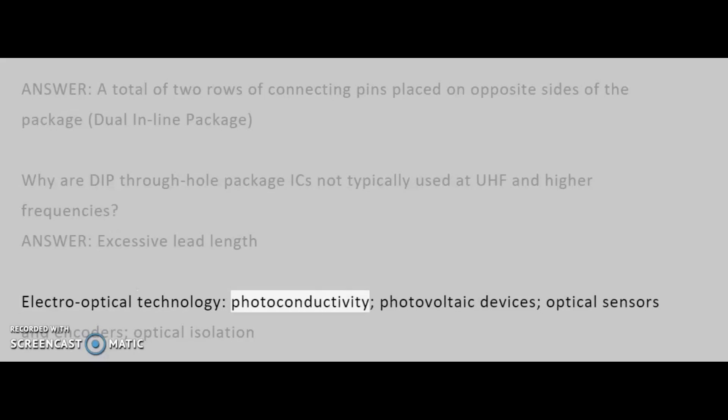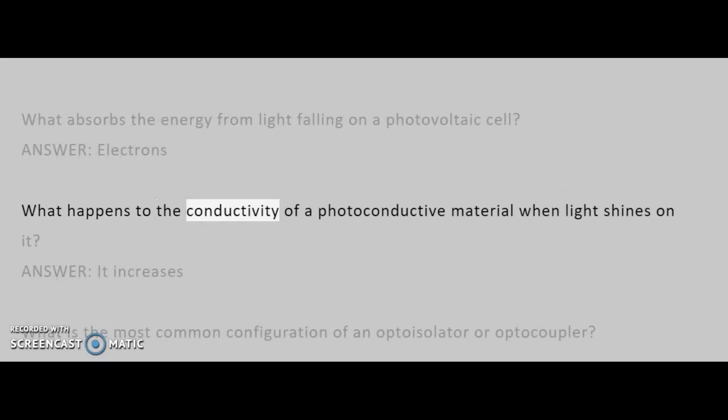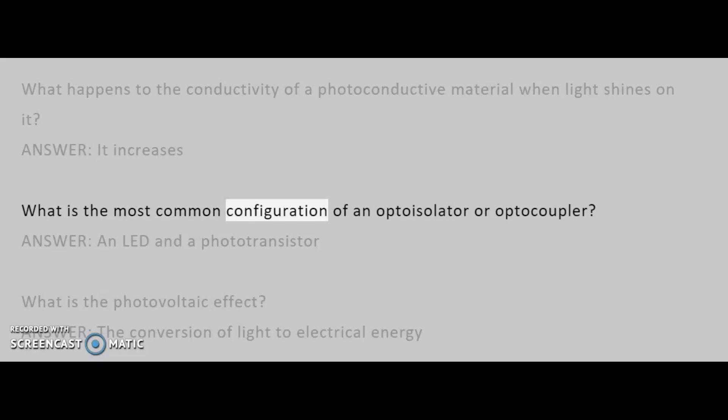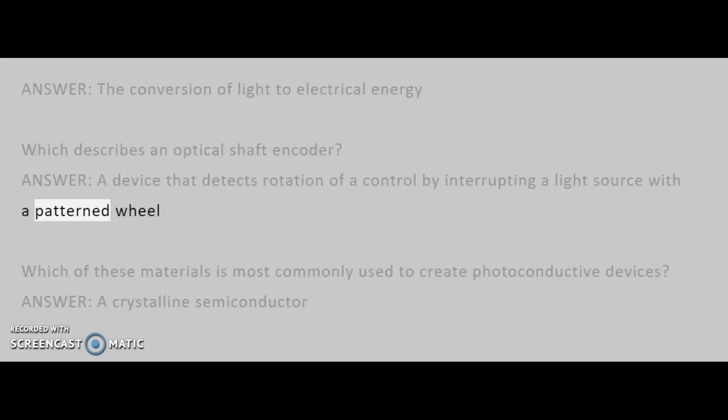Electro-optical technology, photoconductivity, photovoltaic devices, optical sensors and encoders, optical isolation. What absorbs the energy from light falling on a photovoltaic cell? Answer: electrons. What happens to the conductivity of a photoconductive material when light shines on it? Answer: it increases. What is the most common configuration of an optoisylator or optocoupler? Answer: an LED and a phototransistor. What is the photovoltaic effect? Answer: the conversion of light to electrical energy. Which describes an optical shaft encoder? Answer: a device that detects rotation of a control by interrupting a light source with a patterned wheel. Which of these materials is most commonly used to create photoconductive devices? Answer: a crystalline semiconductor.